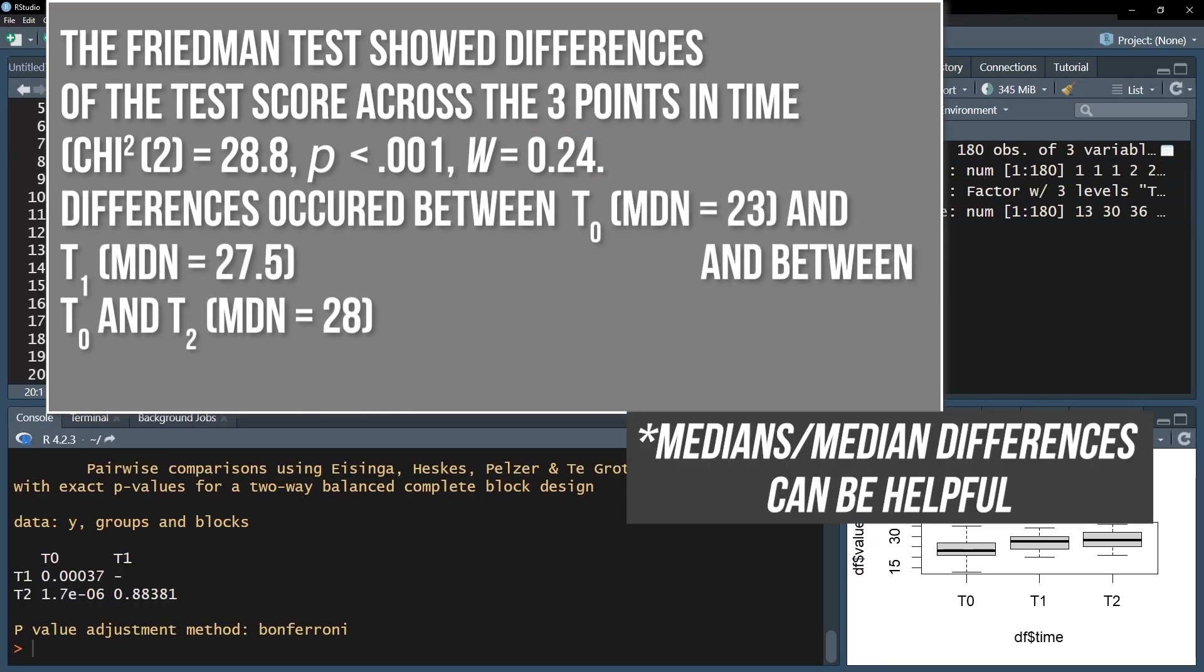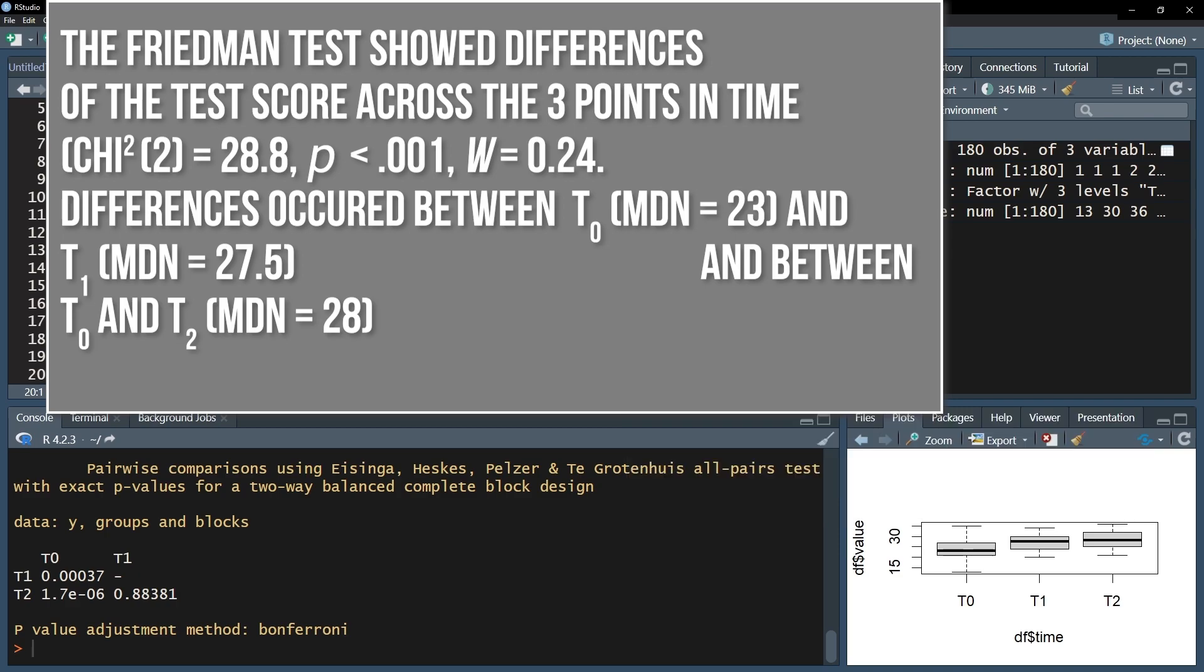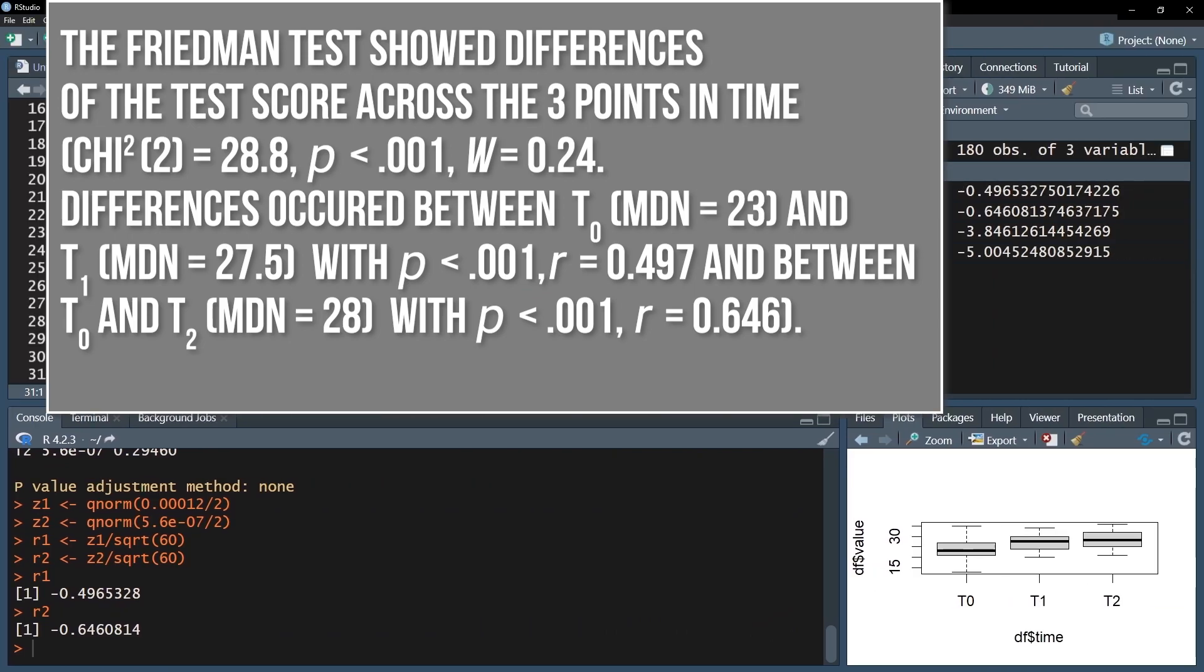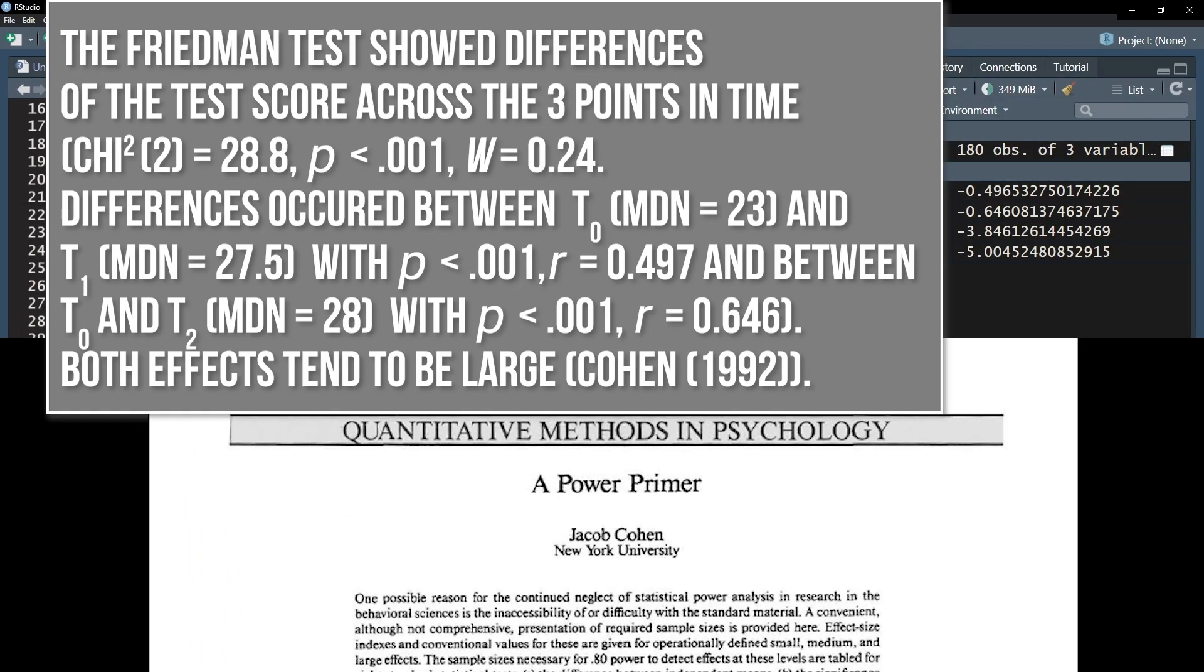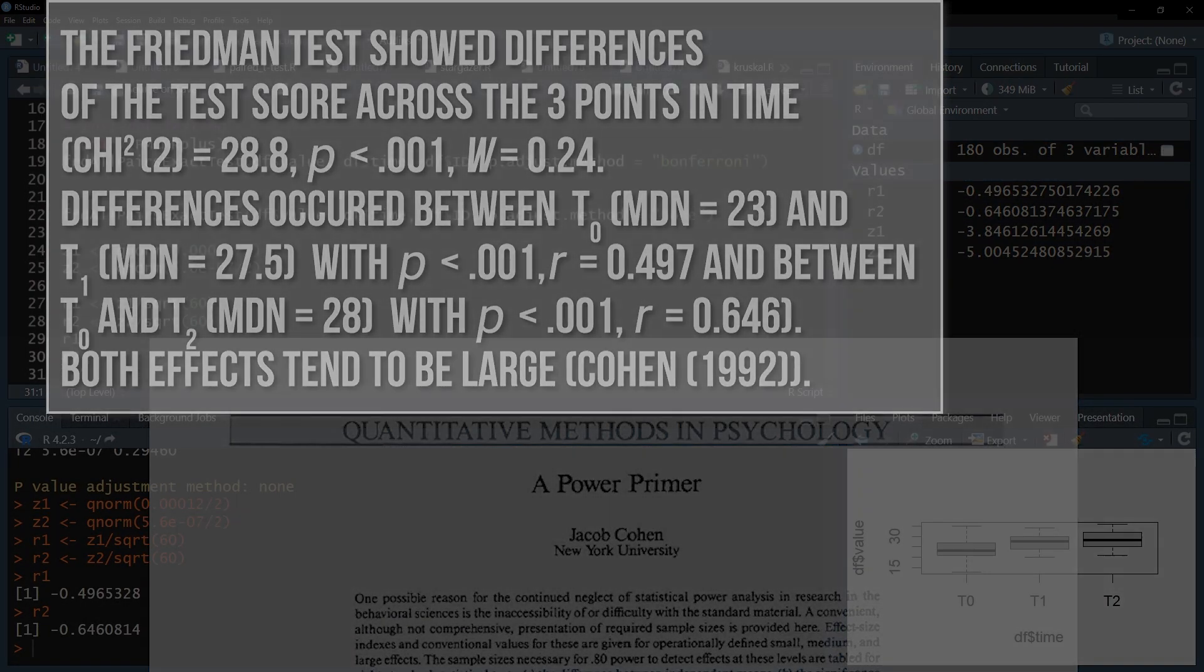In case of calculated post-hoc tests, the observed group differences with a small enough p-value are reported. When you were able to observe an effect, report the calculated effect size r. Finally, the magnitude of these effect sizes are classified with, for example, Cohen 1992 or the respective research field-specific thresholds.